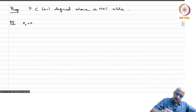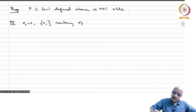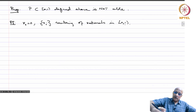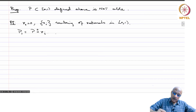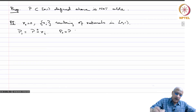For the proof, set R_0 = 0 and let R_i be a numbering of the rationals in [0,1) — it is a countable set. Set P_i equal to P plus R_i (mod 1). Then P_0 equals P itself since R_0 = 0.